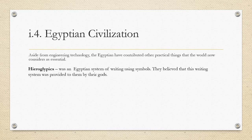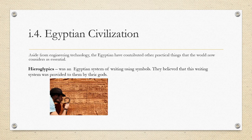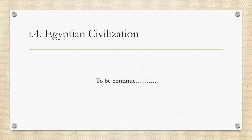The next contribution of the Egyptians was hieroglyphics — the Egyptian system of writing using symbols. They believed that this writing system was provided by their gods. The image of hieroglyphics is as famous as their pyramids. To be continued — thank you.